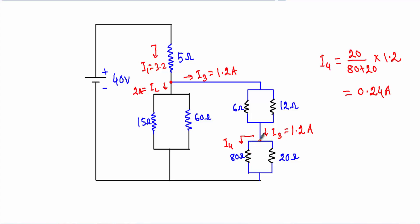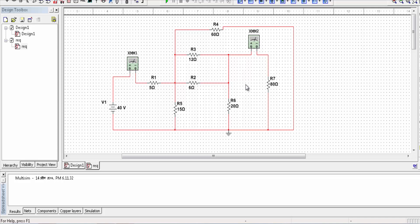The current entering the D node is 1.2 ampere. To calculate the current through the 80 ohm resistor, I apply the current divider rule: I4 equals 20 divided by 80 + 20, multiplied by 1.2 ampere. Therefore I4, the current flowing through the 80 ohm resistor, equals 0.24 ampere.